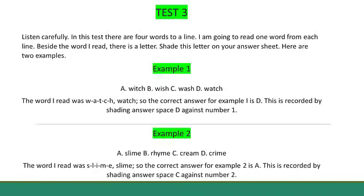Test 3. Listen carefully. In this test, there are four words to a line. I'm going to read one word from each line. Beside the word I read, there is a letter. Shade this letter on your answer sheet. Here are two examples. Example 1. Watch. The word I read was W-A-T-C-H, watch. So the correct answer for example 1 is D. This is recorded by shading answer space D against number 1.